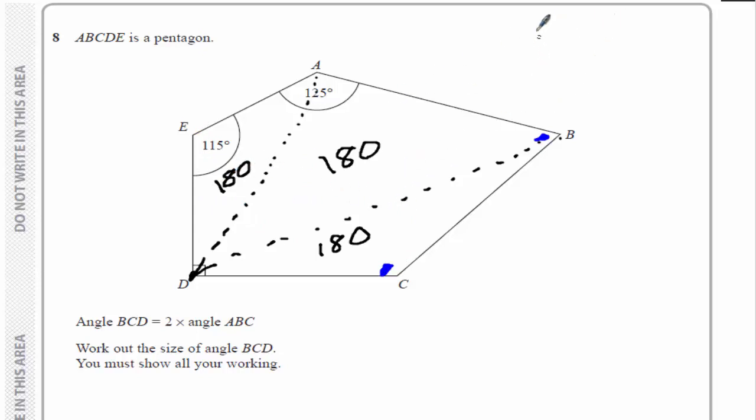So the total angles in the pentagon is three lots of 180. Now, showing this process picks you up the first mark. Getting to the number 540, because that's what three 180s are, has picked you up the second mark.